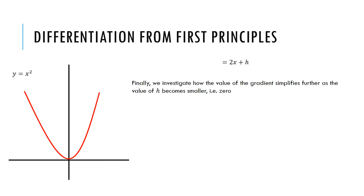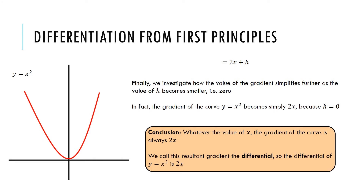We're interested in how the value of that gradient simplifies further as the value of h becomes smaller — as it approaches 0 or becomes 0. The gradient of that curve y equals x squared becomes simply 2x, because here we do something called take the limit and we say that h is equal to 0. So the conclusion of that differentiation process is that whatever the value of x, the gradient of the curve is always 2x. We call that resultant gradient the differential. So the differential of y equals x squared is 2x.